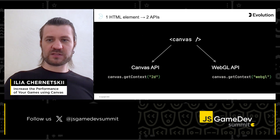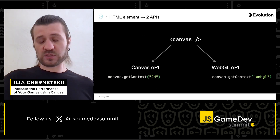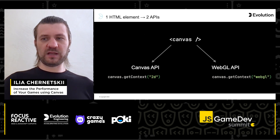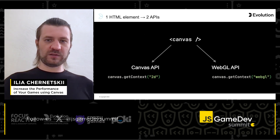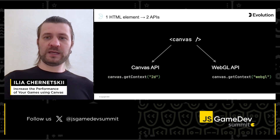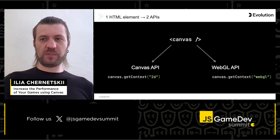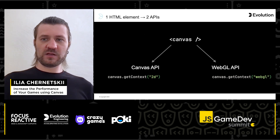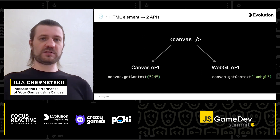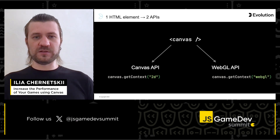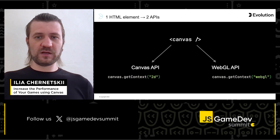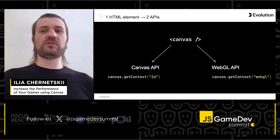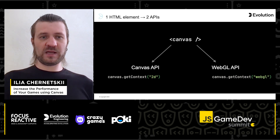When people talk about canvas, they most often mean the Canvas API and the CanvasRenderingContext2D interface. This is the simplest and most low-level way to render in the browser. However, if you want to use the full power of the GPU, then you should consider using WebGL. WebGL API is used with the same HTML canvas element, but uses a different drawing context — the WebGL rendering context — and a different API, the WebGL API. So with one HTML canvas element, we can use two different APIs: the Canvas API and the WebGL API.